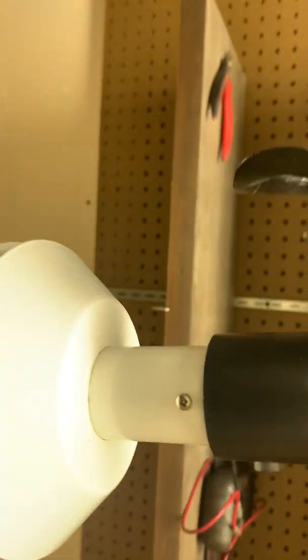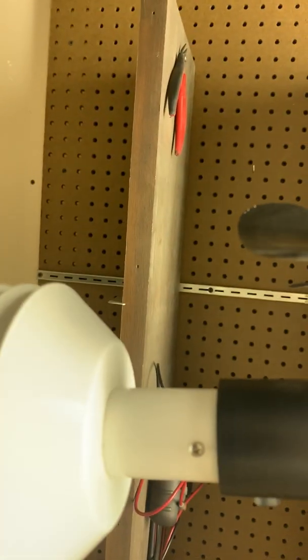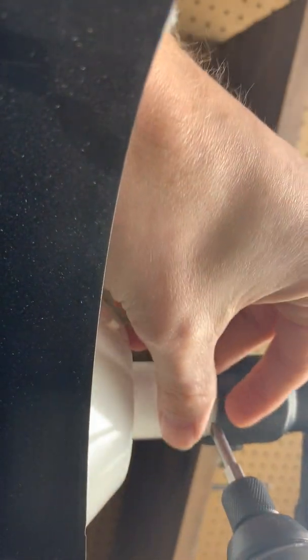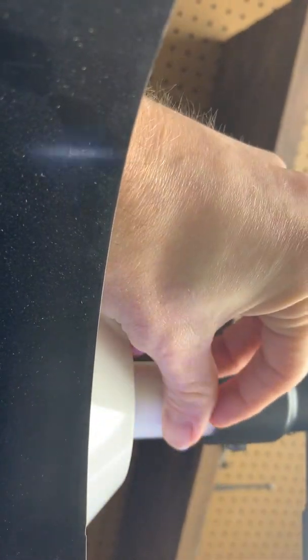Now the problem with this screw is it's super tiny, and since it's so tiny, what's going to happen is you're going to end up dropping it if you're doing this on the roof. So you have to be very careful not to do so. Super small. Just want to place that in there for right now.